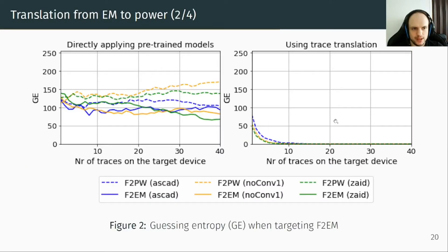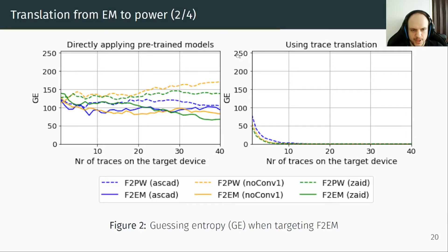This graph shows the guessing entropy when targeting F2 EM. The guessing entropy is the ranking of the key in a list of possible keys. On the left, we have when we directly applied the pretrained model; on the right, when using trace translation. Different colors represent different networks used, and different styles represent the different source of training: dotted line for training with F2 power, solid line for training with F2 EM. The x-axis is the number of traces and the y-axis is the guessing entropy. We observe that the pretrained model does not converge for this amount of training data, whereas the performance with trace translation is superior.